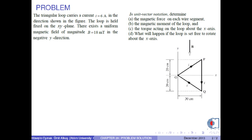The triangular loop carries a current I equals 6 amperes in the direction shown in the figure. The loop is held fixed on the x-y plane. There exists a uniform magnetic field of magnitude B equals 18 millitesla in the negative y-direction. In the figure, the length on the x-axis is A equals 30 cm and the y-component is 20 cm. In unit vector notation, determine A, the magnetic force on each wire segment.